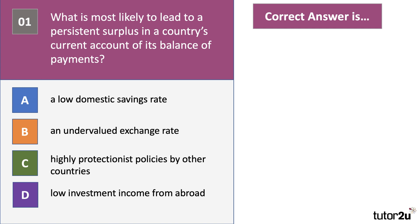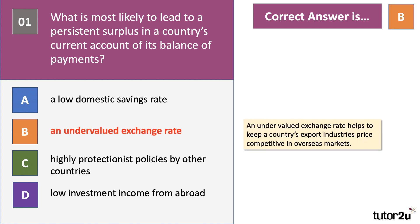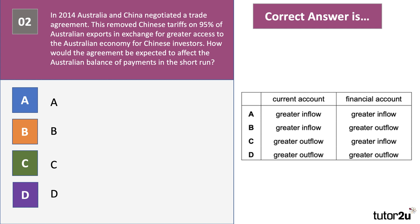Of those four options A, B, C and D, what's the most likely cause of a persistent surplus in the current account? Countries like Germany, China, and South Korea have persistent surpluses. The answer to question one is B — an undervalued exchange rate. Keeping the value of your currency low relative to other countries helps keep a country's export sectors price competitive, especially in overseas markets. High savings tends to lead to a fall in imports and a trade surplus.